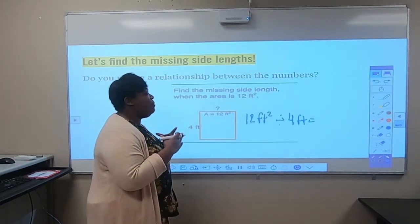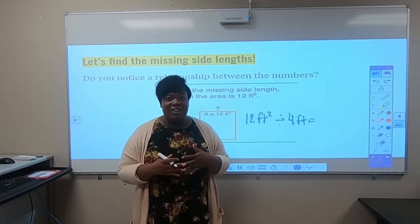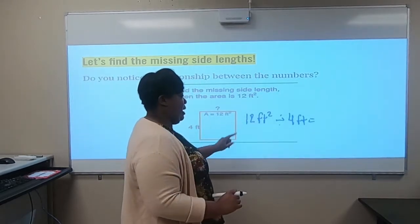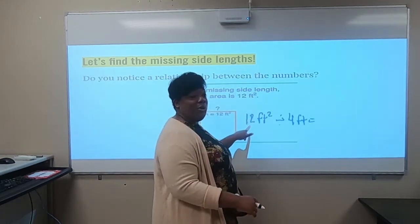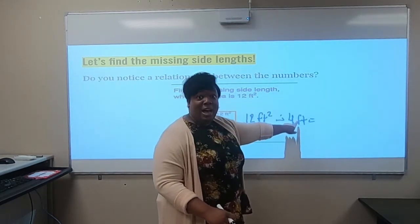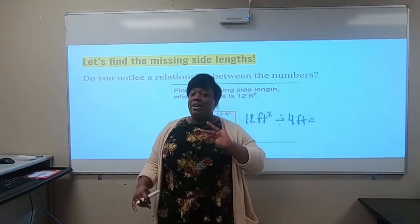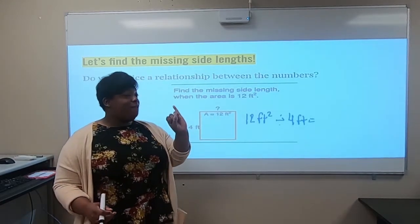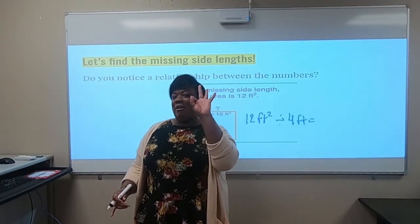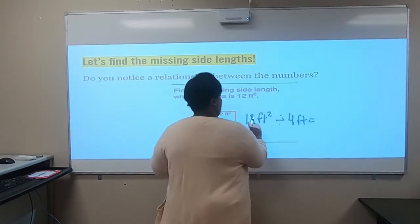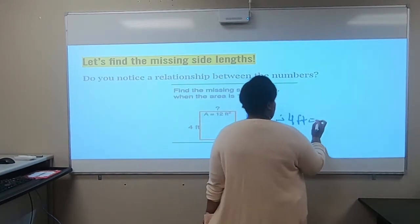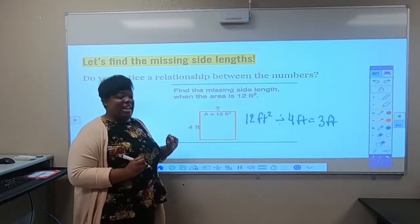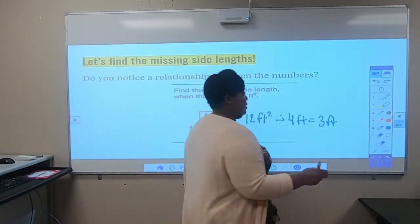My students are often better at multiplication than division, so I encourage them to skip count by the known side until they reach the area. Let's count by fours until we get to twelve, tracking with our fingers: four, eight, twelve — three fingers. So twelve square feet divided by four feet equals three feet. Our unknown side is three feet.